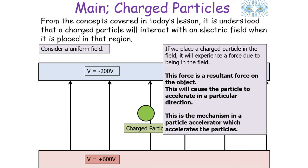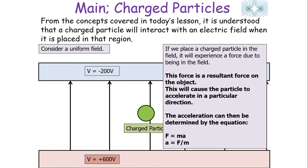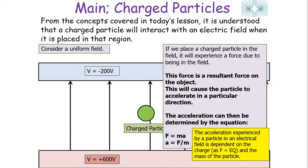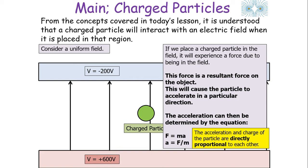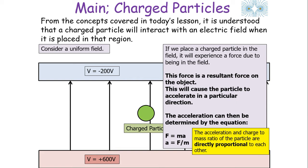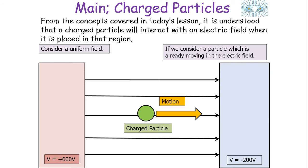This force can cause the object to accelerate in a particular direction, and this is the mechanism by which a particle accelerator works. Using F equals MA, the acceleration of the charged particle is F over M. Since F equals EQ — because electrical field strength E is F over Q — the acceleration depends on both the charge and the mass of the particle. So acceleration is directly proportional to charge, inversely proportional to mass, or equivalently, directly proportional to the charge-to-mass ratio.